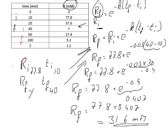Before accepting this, let's check: our unknown y must lie between 57.6 and 17.4 millimolar, and 31.6 is indeed in between, so it makes sense to accept 31.6 millimolar as correct.